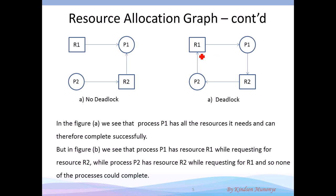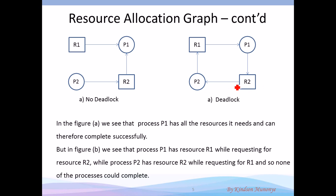In the second example: process two is requesting for resource one. Resource one is being held by process one. Process one is requesting for resource two. Resource two is being held by process two. This is a deadlock. Resource one is held by process one and can't be released until it finishes. For process one to finish, it needs resource two. Process two is holding resource two and is not releasing it, and for it to finish it needs resource one. There is a complete deadlock.